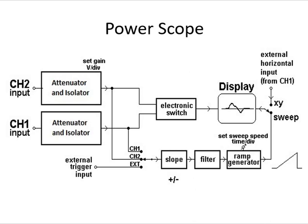If there is an exam question to explain the block diagram of the power scope, draw the block diagram and explain the difference between a simple oscilloscope and the power scope — specifically the main and ground terminal. Then discuss the attenuator and isolator block. Channel 1 and channel 2 inputs go to the attenuator and isolator, then to the electronic switch, and the signal is displayed. The external trigger input from channel 1 and channel 2 is provided to the slope block, then to the filter, and the ramp generator generates the output. Depending on the sweep and XY generator, the display position determines which signal is shown.